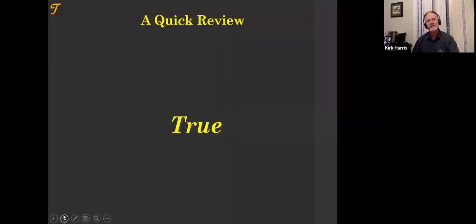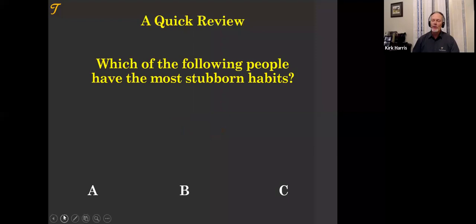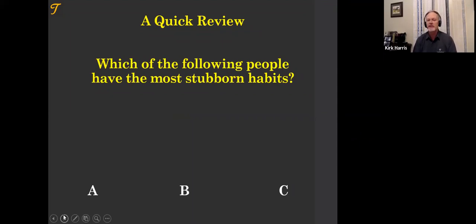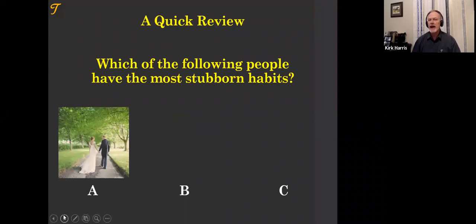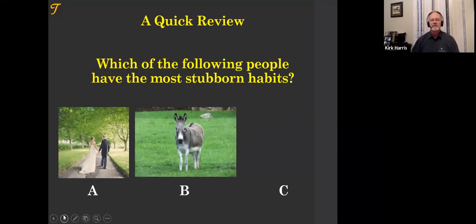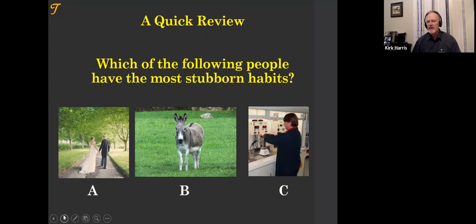Question two — which of the following people have the most stubborn habits? The choices are: A, your spouse or significant other; B, a burro; or C, a cement lab technician. Which of the following have the most stubborn habits?